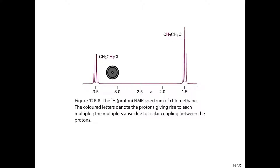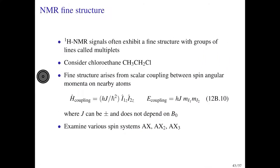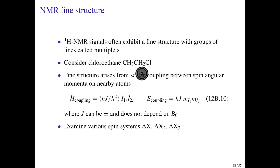The purpose of this video is to explain these patterns. You probably know from organic chemistry that this is due to the n+1 rule, and the aim here is to explain the origin of that rule. At the end of the day, this fine structure arises due to coupling between the spin angular momenta of nearby atoms. In chloroethane, the spin angular momenta of the methyl protons are coupled to those of the methylene protons, giving rise to the splitting seen in the resonances.